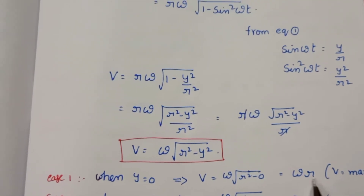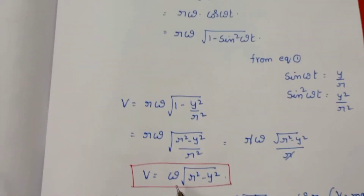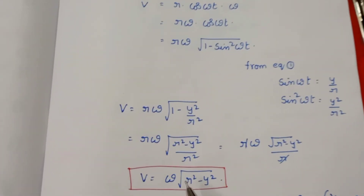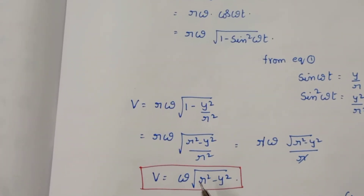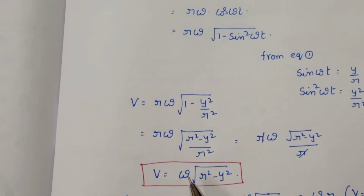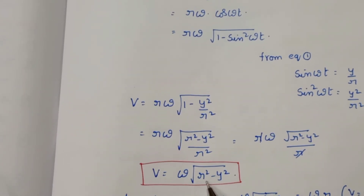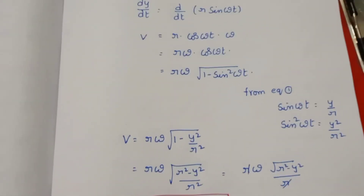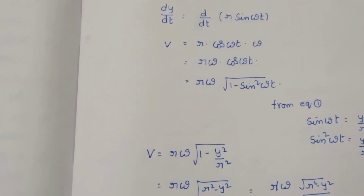So, the velocity equation in simple harmonic motion is: v = ω·√(r² − y²).